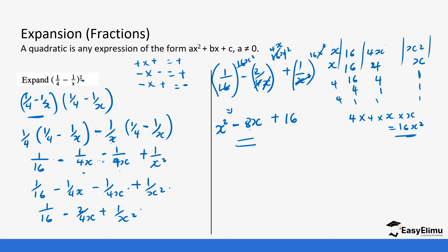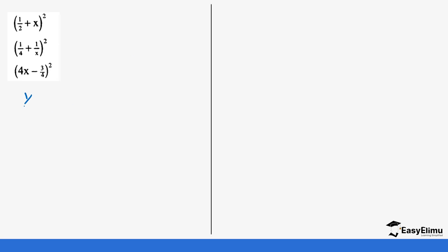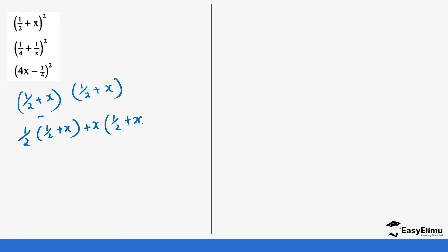So let's do a few more examples. We have (1/2 + x)². Being squared means you're multiplying it by itself two times. We use one expression to open the other: (1/2)(1/2 + x) plus x(1/2 + x). Opening the brackets: 1/2 times 1/2 gives 1/4, plus 1/2 times x gives 1/2 x, then plus x times 1/2 gives 1/2 x, and x times x gives x².